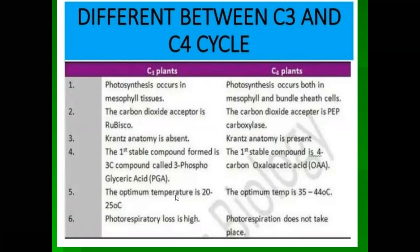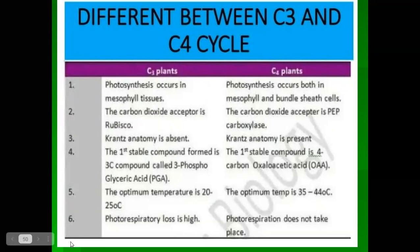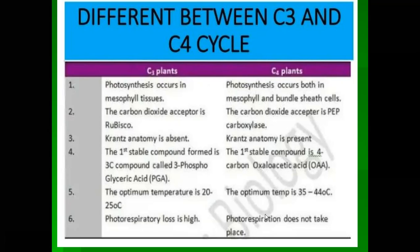The optimum temperature for C3 plants is 20–25°C, while for C4 plants it is 35–44°C. In C3 plants, photorespiratory loss is high. Photorespiration occurs when RuBisCO acts as an oxygenase enzyme in the presence of oxygen, causing the chloroplast to receive oxygen and undergo respiration. However, C4 plants do not participate in photorespiration — photorespiration does not take place in C4 plants.